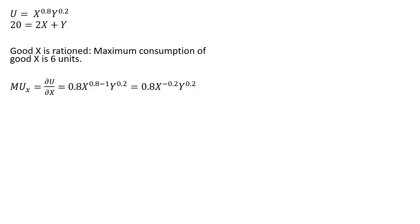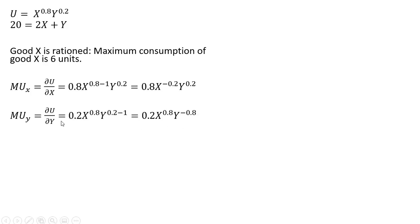First, we're going to get the marginal utility of Good X by taking the partial derivative of the utility function with respect to X. The exponent on the X term comes down in front, and then we subtract one from that exponent. We don't have to do anything with the Y term, and this simplifies to X raised to the −0.2 power. For the marginal utility of Good Y, we take the exponent on the Y term, bring it down in front, subtract one, giving us Y raised to the −0.8 power. We don't have to do anything with the X term.